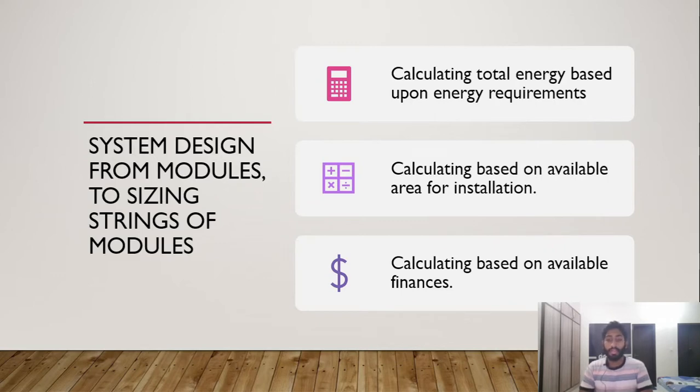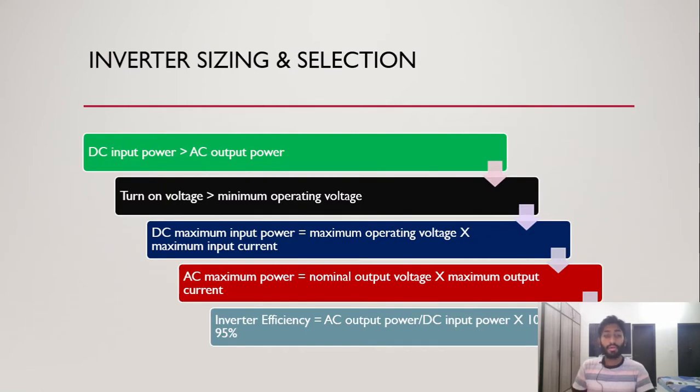Now it goes to inverter sizing and selection. If you have an inverter in front of you and you look at the specifications sheet or at the back, you have to look at the DC input power - that is always going to be greater than the AC output power because of efficiency. Normal inverter efficiency is around 90 to 95 percent, so the DC input has to be higher than the AC output. You also have to look at the turn-on voltage, which is the minimum voltage that needs to be higher than the minimum operating voltage in order to operate.